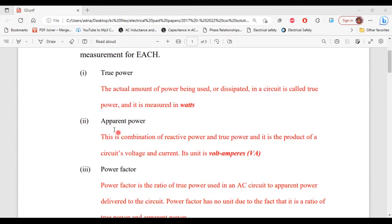Part two, apparent power. So the apparent power is a combination of reactive power and true power. It is the product of a circuit's voltage and current and its unit is volt amperes.